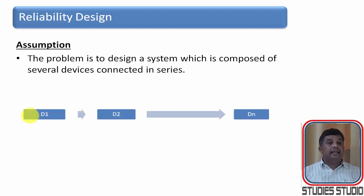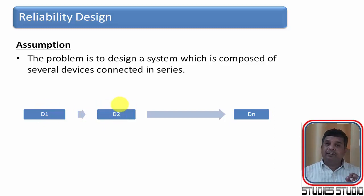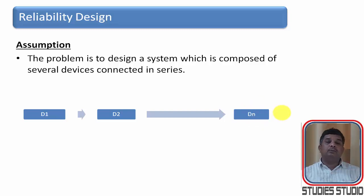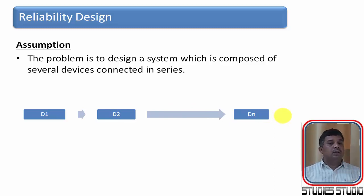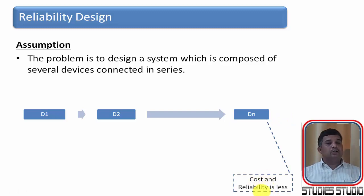Basically, if we have a system where there are a few components connected in series, then the input is given to D1, the output of D1 is given as input to D2, the output of D2 is given as input to D3, and similarly the output of Dn goes as the output of the whole system. In this system, if any component fails in between, the total output will also not come through — meaning cost is low and reliability is also low.